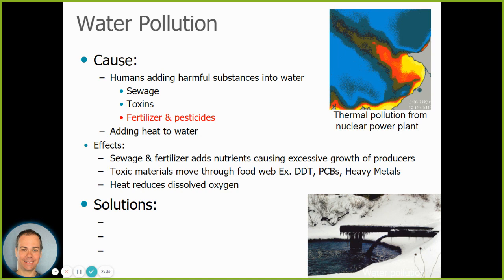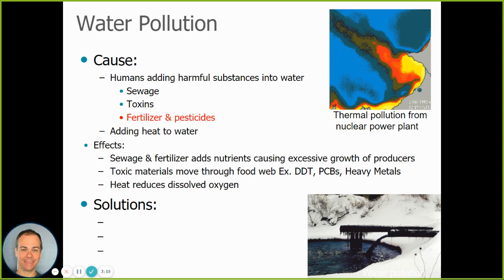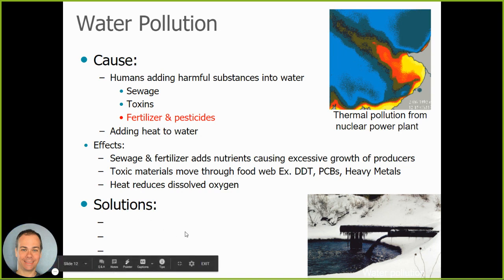Just like pesticides work their way into the food web with endangered species, the same happens in water. Dangerous substances make their way through the food chain, building up in the tissues of organisms until they become toxic. The types of things that can be dangerous include heavy metals like mercury, lead, or arsenic; PCBs found in electrical equipment and used in industry; DDT, a pesticide; and microplastics that get into the digestive systems of different animals.